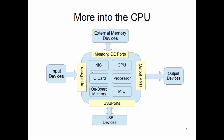Inside the computing system, these components communicate with the external world through ports. Ports are the means through which data is exchanged between a central processing unit and external devices. There are input ports through which input devices communicate to the CPU, and output ports through which the CPU communicates to output devices. These communications are unidirectional — input devices communicate to the CPU but not the other way, and output devices are communicated by the CPU but not vice versa.